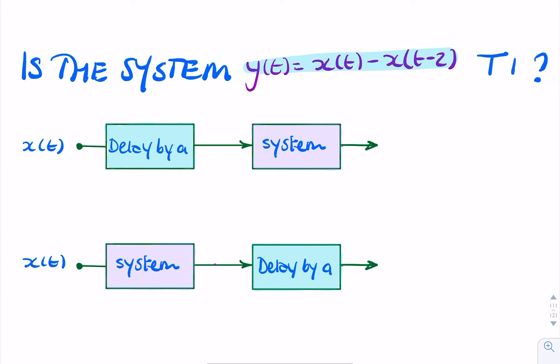So you can do this by applying the test of time-invariance. If x of t is delayed by a seconds, we simply have x of t minus a here. And if that then goes into our system, we can find the output by simply replacing all instances of t with t minus a.